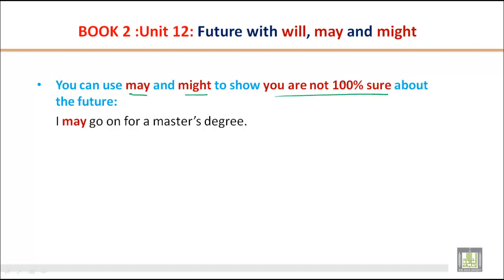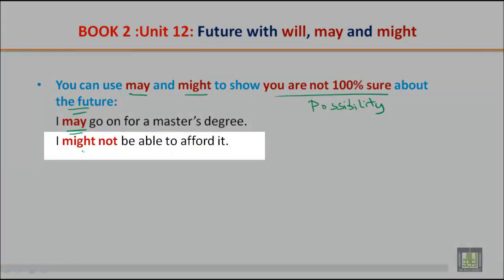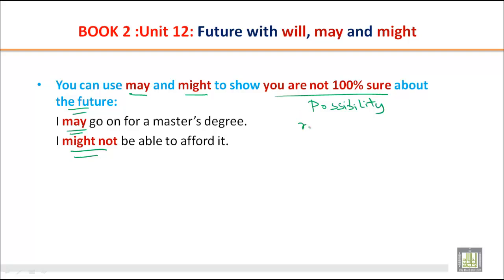You can use may and might to show you are not one hundred percent sure about the future — we use them for possibility. For example: 'I may go on for a master's degree' or 'I might not be able to afford it.' The difference is that may indicates higher possibility, while might indicates lower possibility.